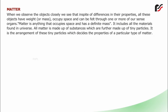When we observe objects closely, we see that in spite of differences in their properties, all these objects have weight or mass, occupy space, and can be felt through one or more of our sense organs. Matter is anything that occupies space and has a definite mass. It includes all the materials found in the universe. All matter is made up of substances which are further made up of tiny particles, and it is the arrangement of these tiny particles which decides the properties of a particular type of matter.